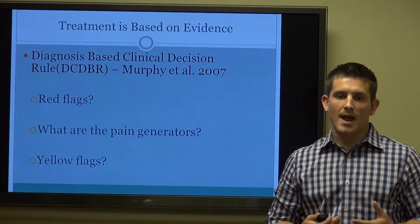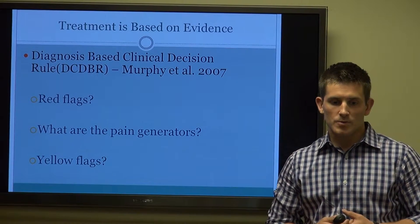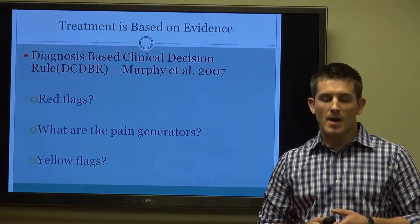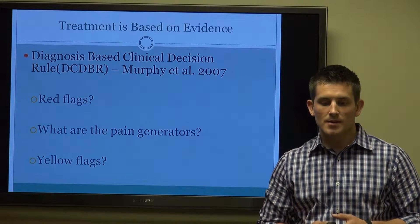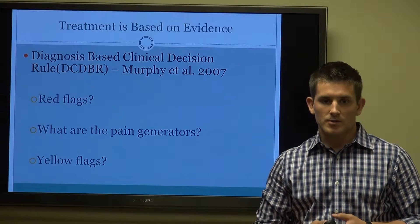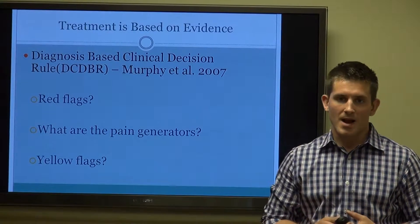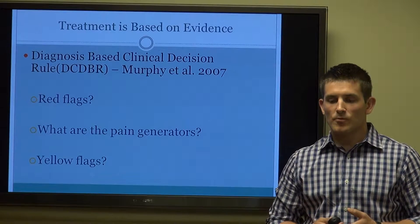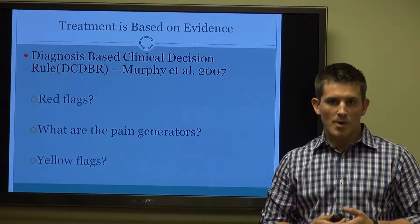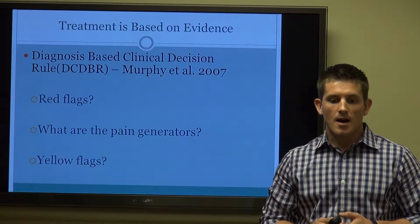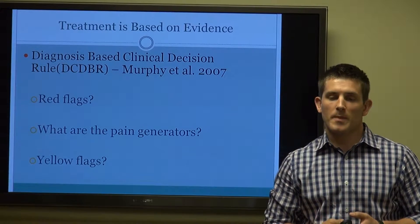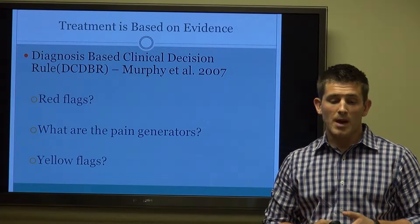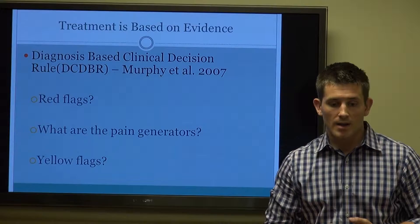Treatment is based on evidence. We use what's called the Diagnosis-Based Clinical Decision Rule, or the DCDBR. This was formulated by Dr. Donald Murphy of the Rhode Island Spine Center, along with a few others back in 2007. Basically, we start by asking three simple questions. Are there any red flags? Based on the current literature, red flags will present to a chiropractor's office about 2.7% of the time. From there, we rule out the red flags and look at what are the pain generators.